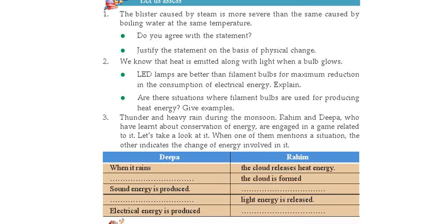The next question: Are there situations where filament bulbs are used for producing heat energy? Give examples. We know that filament bulbs produce both light energy and heat energy. Normally we use only light energy, but in some situations the heat energy of the filament bulb is also useful.